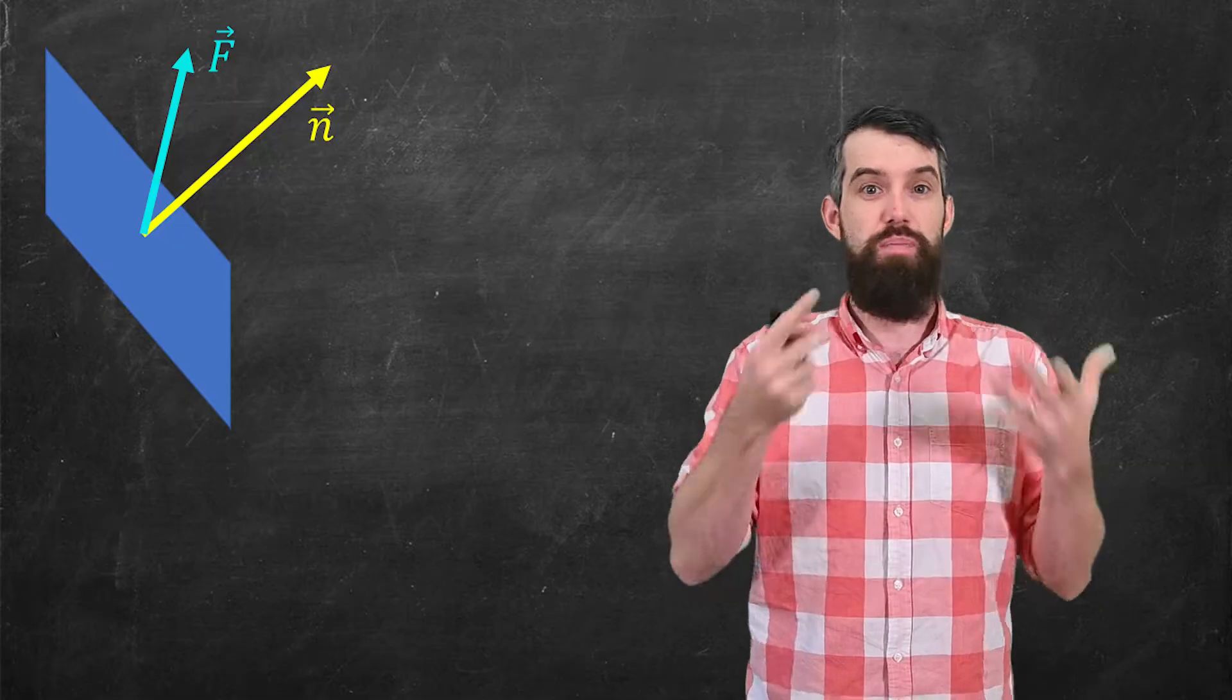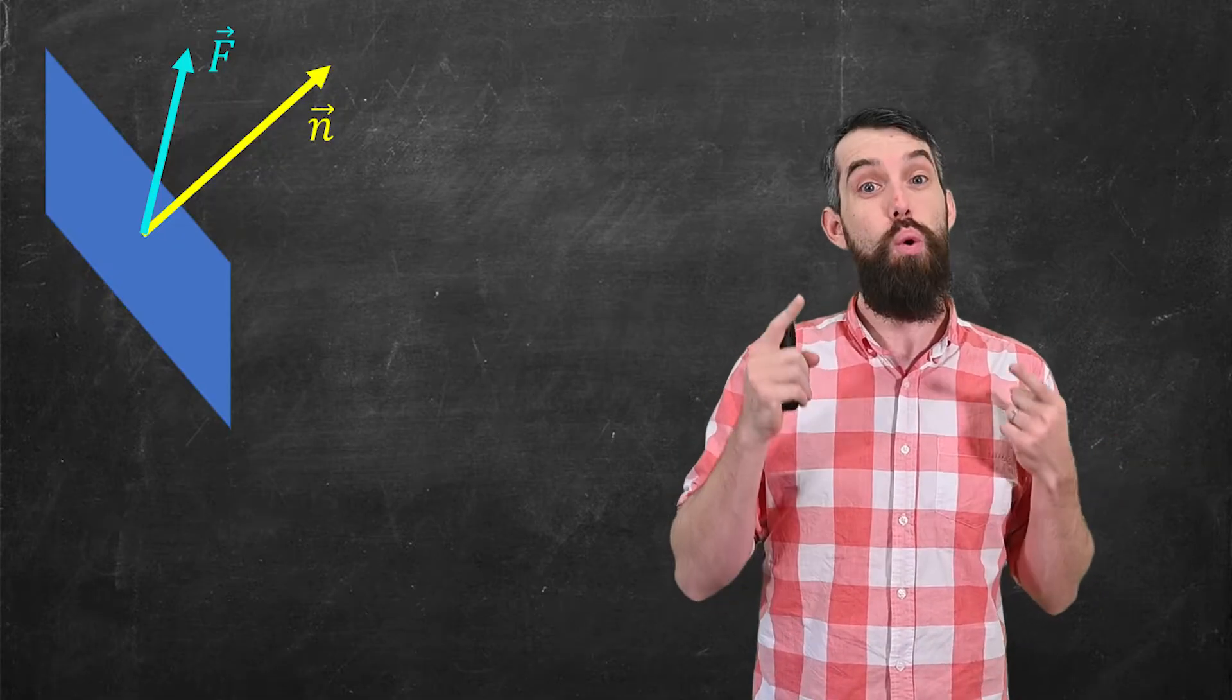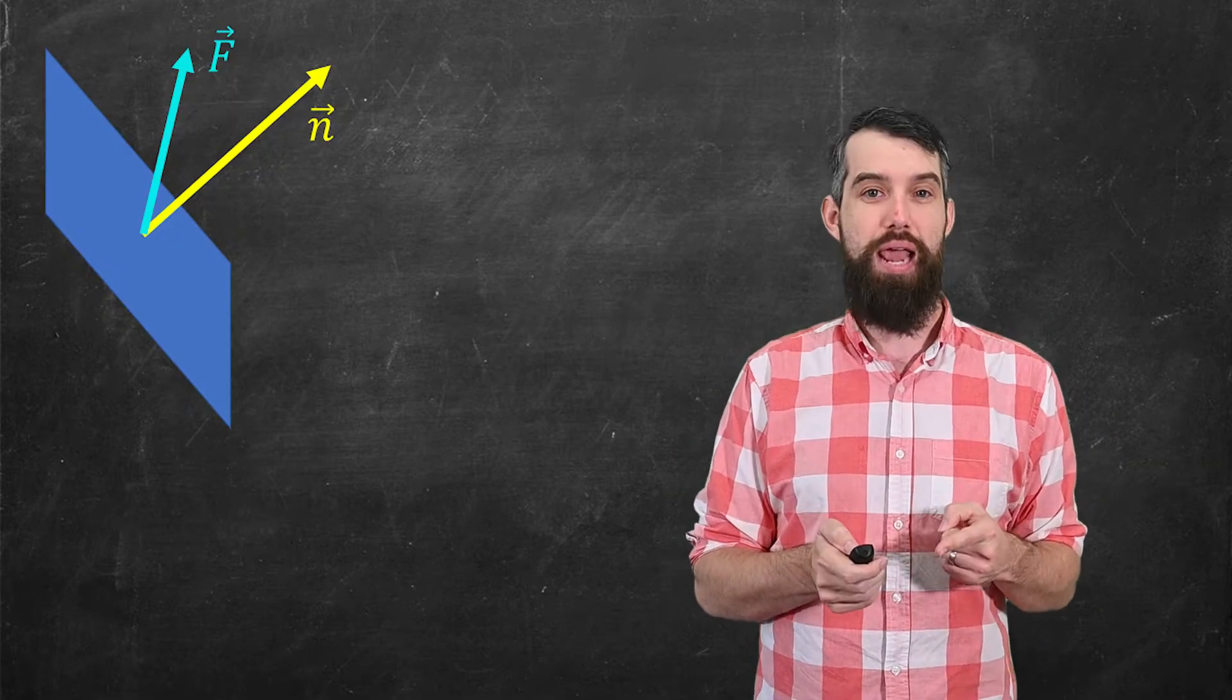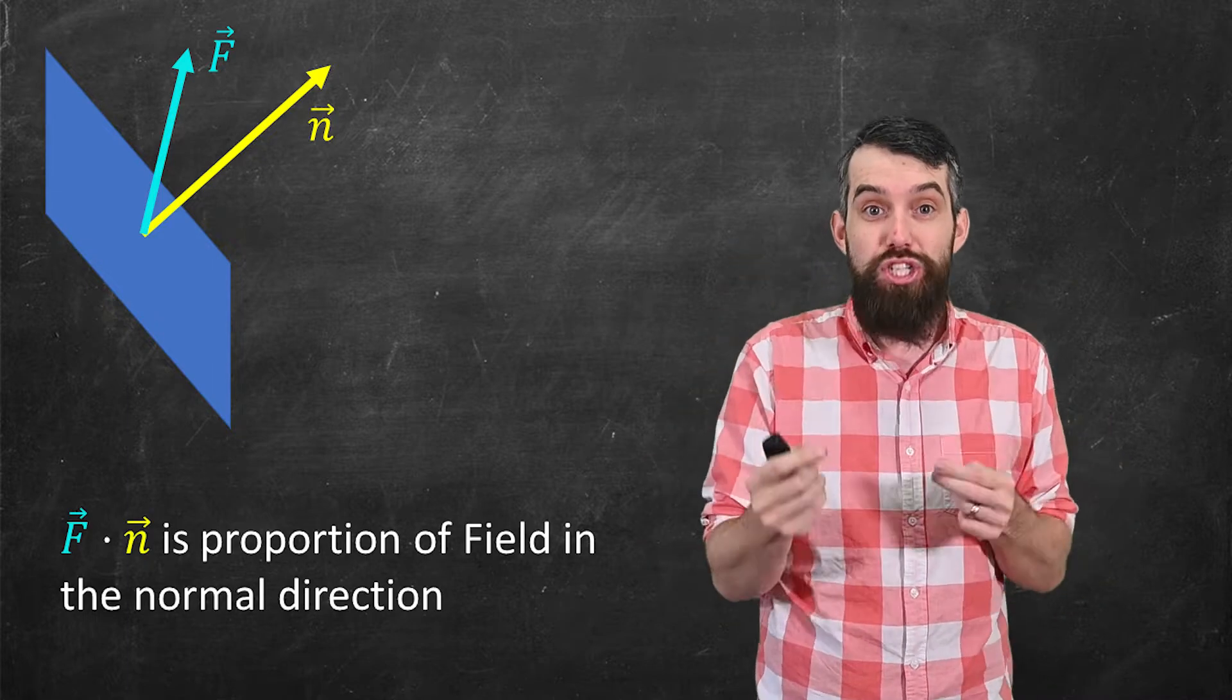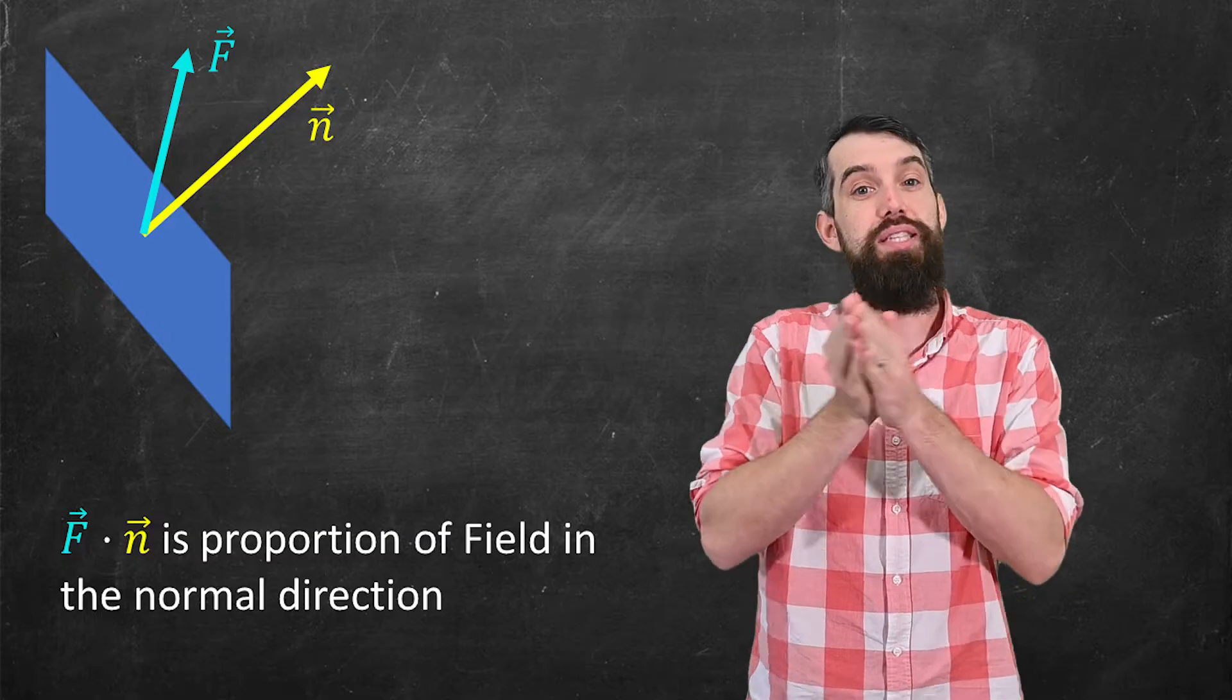Then my vector field is just going to be some vector. And so what I'm interested in is measuring f dot n, because f dot n is going to be the proportion of the field which is in that normal direction.